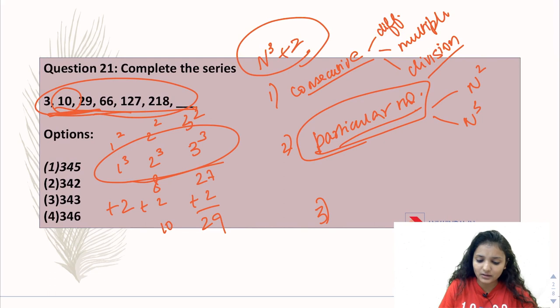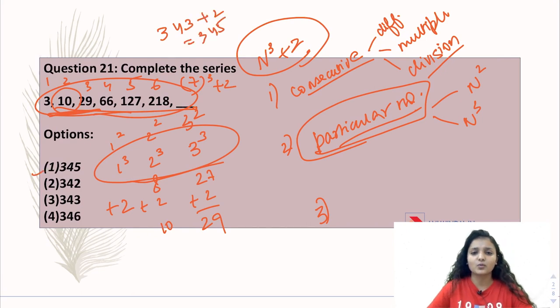So here will be 7, so 7 cube plus 2. 7 cube is 343, plus 2 is 345. Your answer is option number 1. For squares or cubes, you should have at least 1 to 25 by heart learned, which will give you a lot of help in question solving. And cubes also, you need to know many numbers.